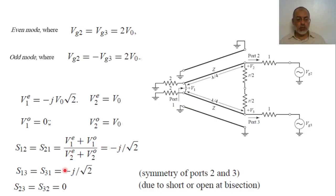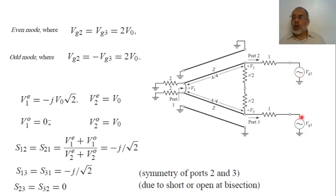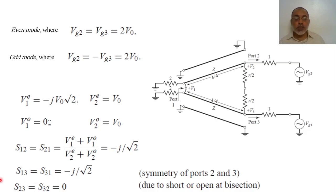S13 and S31 from the symmetry of ports two and three are the same as S12 and S21. On the other hand, S23 and S32 are obtained by adding and subtracting the even and odd modes. When we add the two modes, S2 has a magnitude while S3 equals zero; when subtracting, S3 has magnitude while S2 equals zero. So S23 equals S32 equals zero, because due to the short and open bisectioning of the even and odd sections there is no connection between ports two and three.